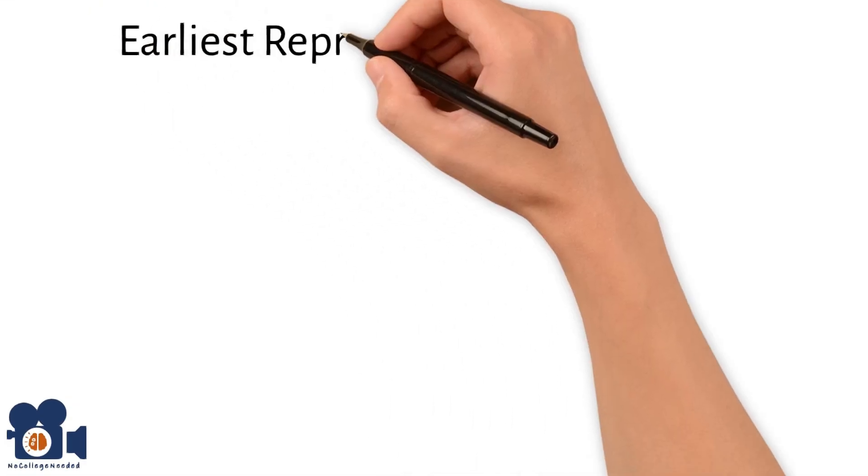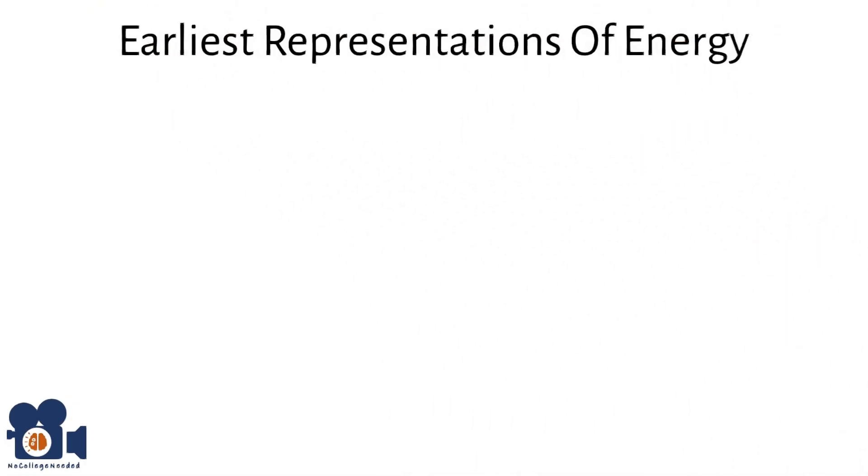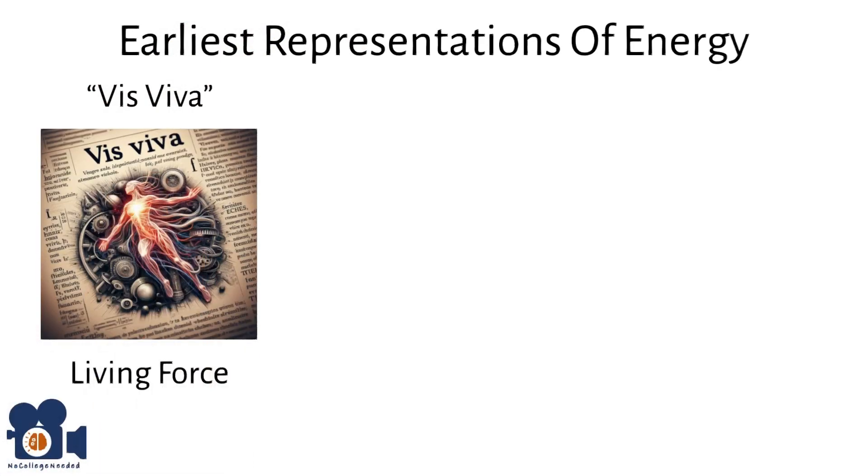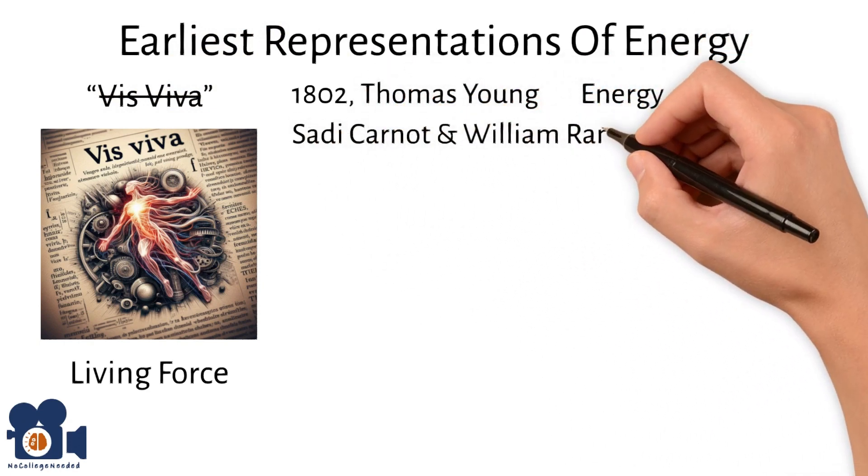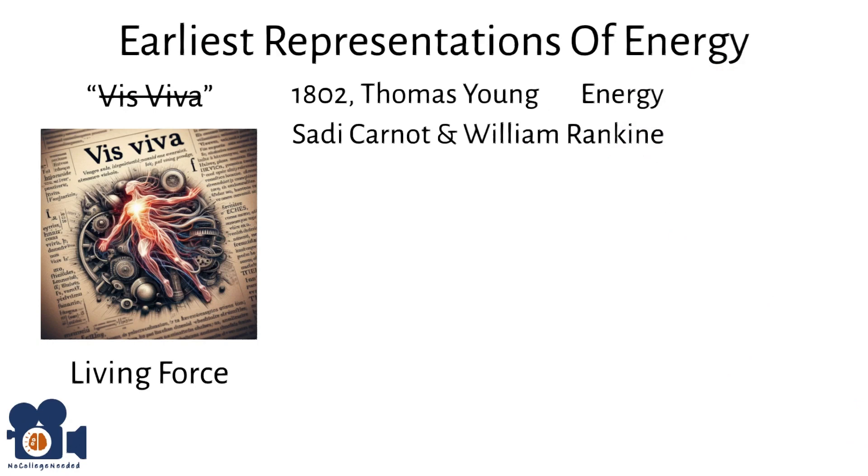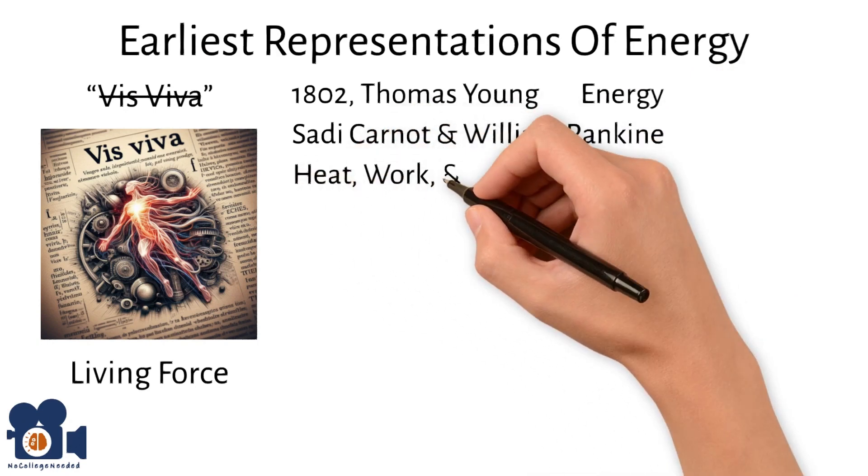Some of the earliest representations of energy were embodied by the Latin term vis viva, meaning living force. However, in 1802, Thomas Young was the first person to replace the term vis viva with energy, and Sadi Carnot and William Rankine further refined this into the modern concepts of heat, work, and different types of energy.